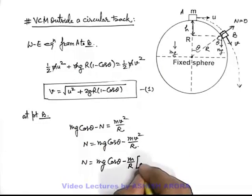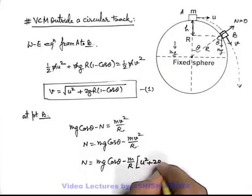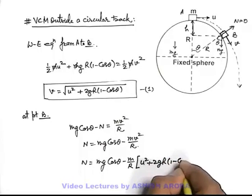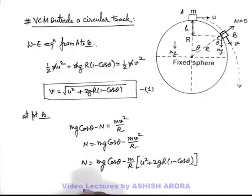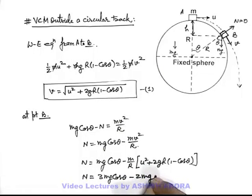v², that is u² + 2gR(1 - cos theta), on solving we get N equals 3mg cos theta minus 2mg minus mu²/R.